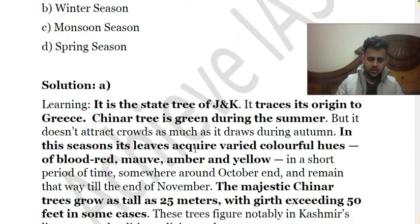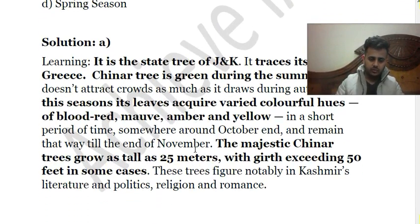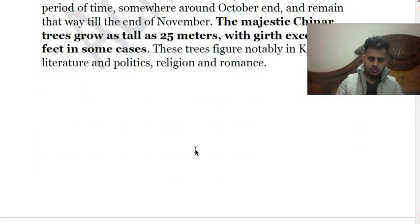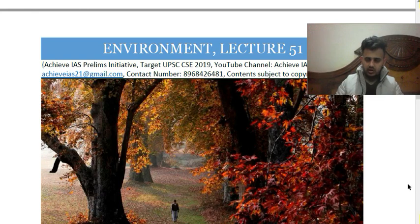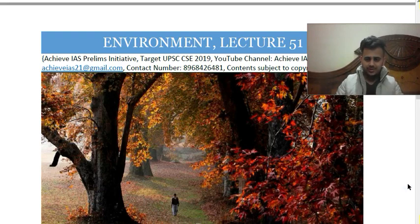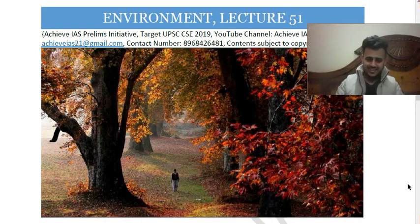The Chenar tree is a state tree of Jammu & Kashmir — quite large and wide. It changes its color into colorful hues of blood red, mauve, amber, and yellow. An image has been included in the lecture so you can see the red leaves and the other colors. The instructor humorously notes that girls can more aptly define these colors, since boys typically only know a few — black, blue, red, green, and yellow.